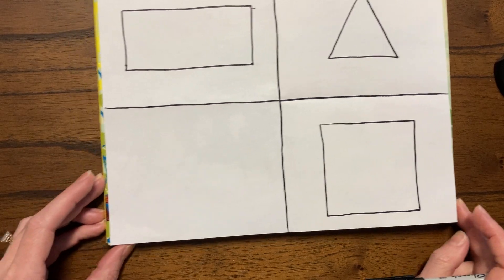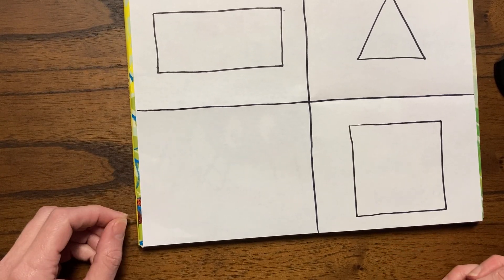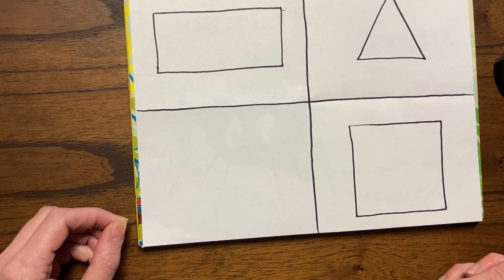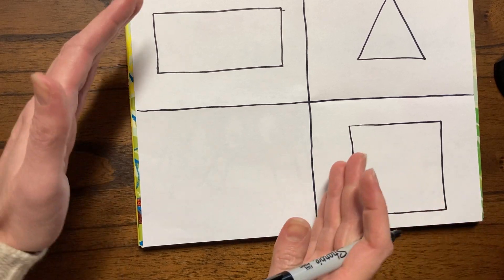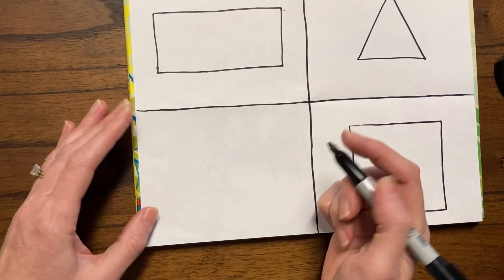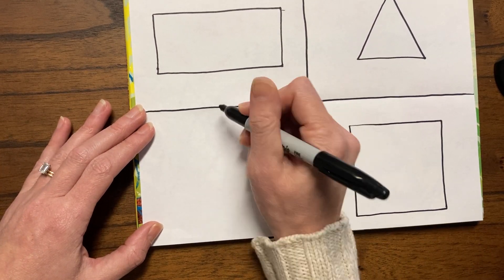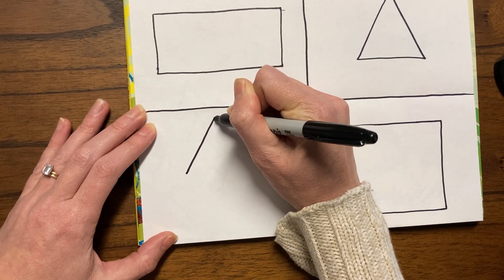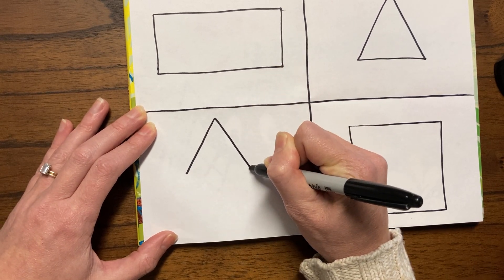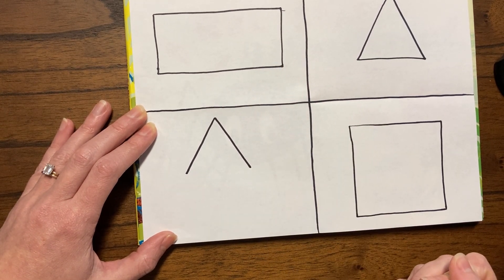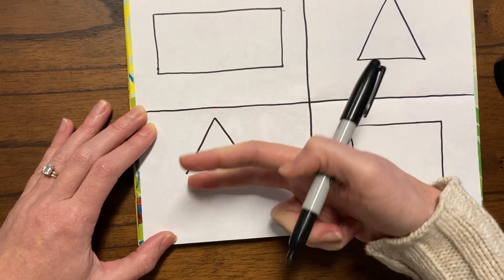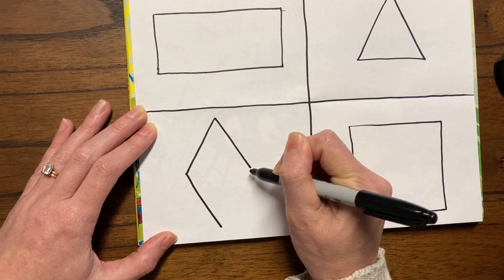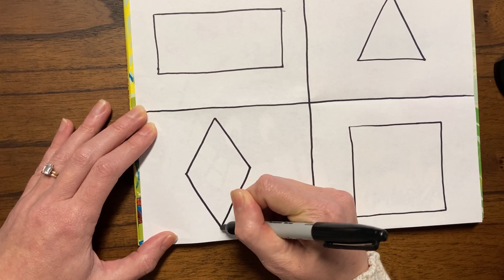So we have one more box left. Let's draw what we call a diamond. It's actually a square that's kind of been tilted and moved. So the point's going to be at the top, kind of like a mountain. And then we want to flip that idea and do it again on the bottom. Just like so.